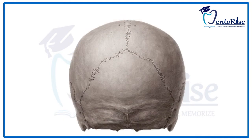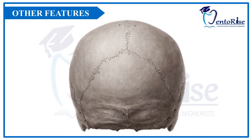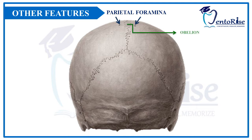Now let's discuss certain other features which can be viewed from Norma Occipitalis. In our video on Norma Verticalis, we discussed about the parietal foramina, the obelion, and the lambda. These features can also be seen in Norma Occipitalis. If you haven't watched our video on Norma Verticalis, please do check it out with the link in the description box below.